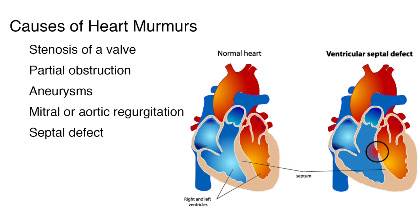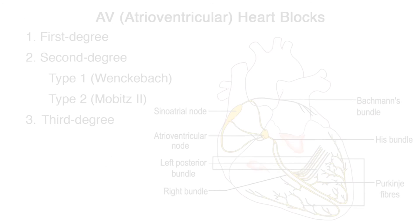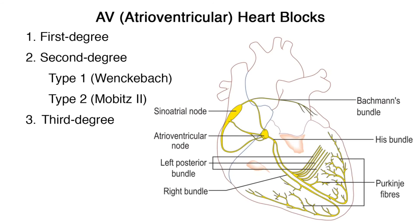S is for septal defect — a hole in the septum that separates the ventricles or the atria. A heart block is an abnormal heart rhythm known as an arrhythmia and can occur anywhere in the specialized conduction system of the heart. The electrical signals telling the heart to contract are partially or totally blocked between the atria and ventricles; therefore, it is called an atrioventricular or AV block.